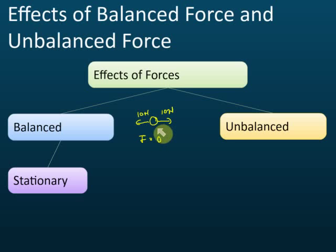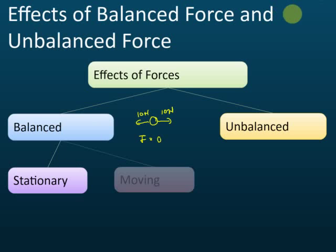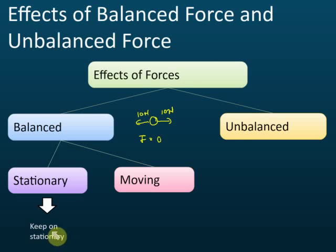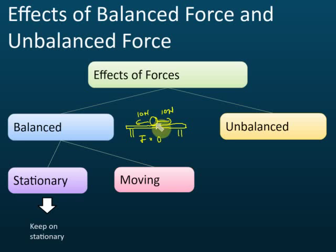If the force applied on an object is balanced and the object is stationary — not moving — then it will keep on stationary. For example, if this object stays on the table, not moving, and the force applied is balanced — 10 newtons to the right and 10 newtons to the left — then it will keep on stationary, not moving. So if a balanced force is applied on a stationary object, it will remain stationary.